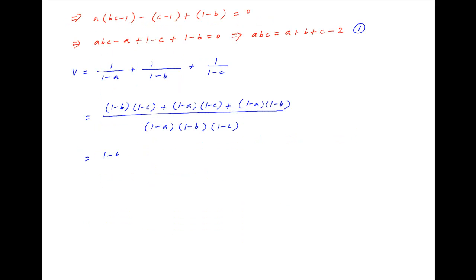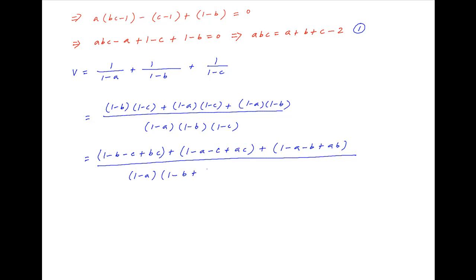The numerator expands to 1 minus B minus C plus BC plus 1 minus A minus C plus AC plus 1 minus A minus B plus AB. The denominator is (1 minus A)(1 minus B minus C plus BC), which simplifies to 3 minus 2(A plus B plus C) plus AB plus AC plus BC.